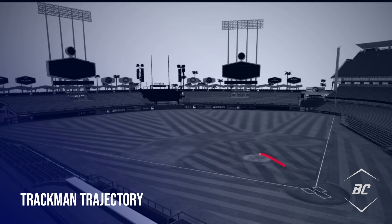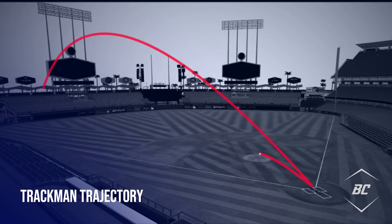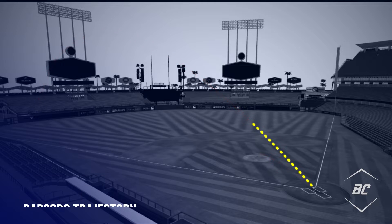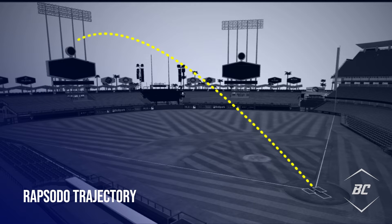Trackman derives movement metrics by using Doppler radar technology to track a ball over the entire trajectory of its path, from release point through the end of any given play. From this, Trackman can directly measure ball movement characteristics. This method of ball tracking is inverse to technologies like Rapsodo, which uses images of the ball captured over a specific distance to predict the total trajectory.